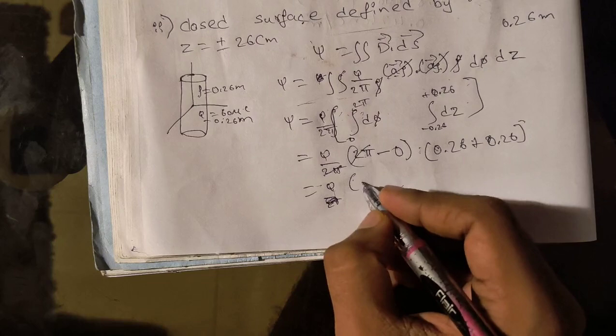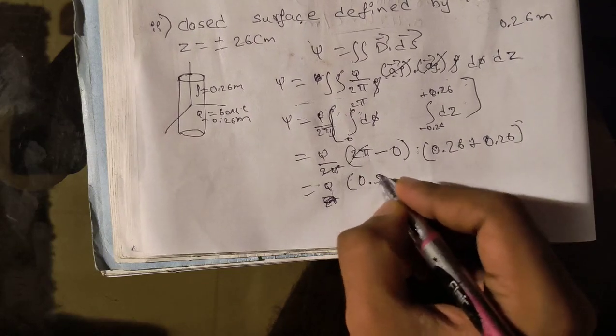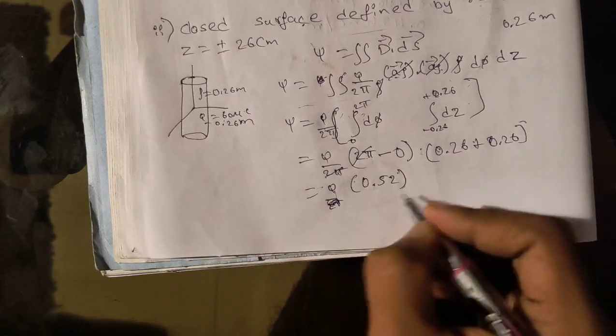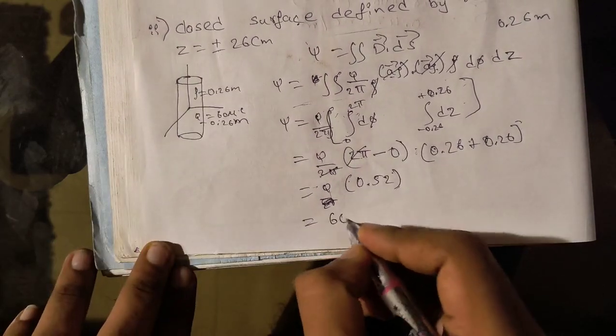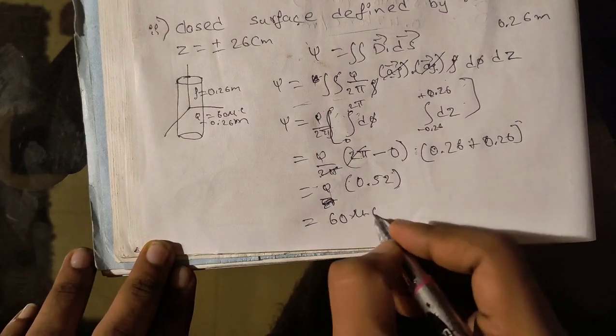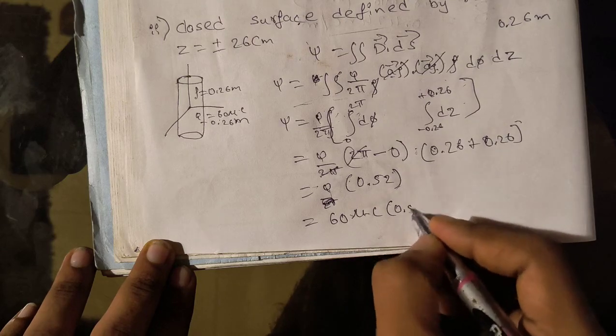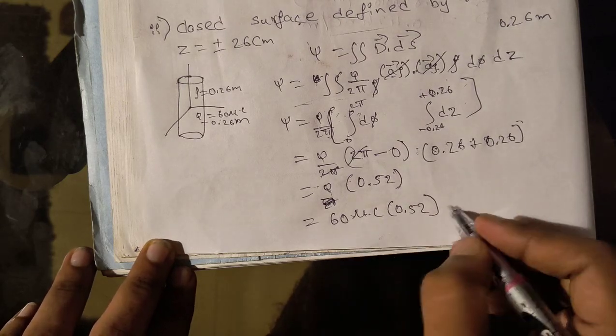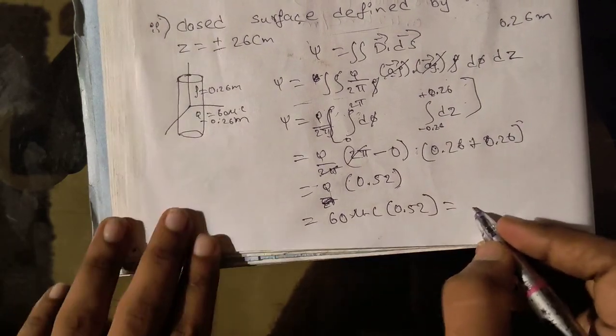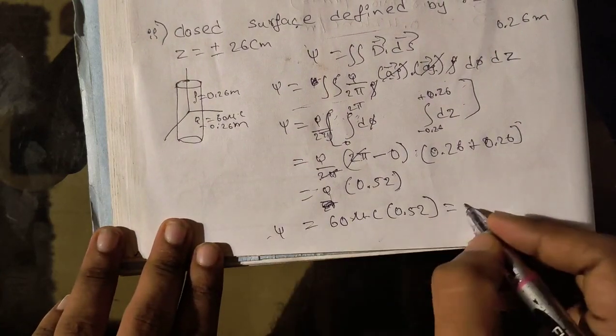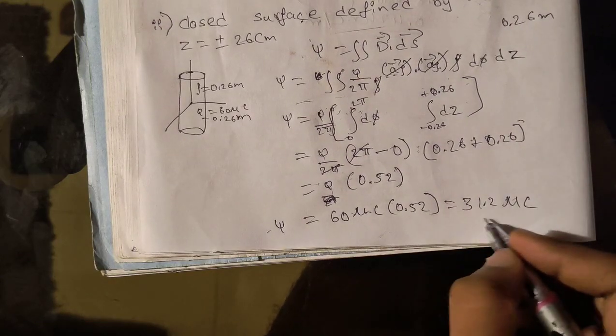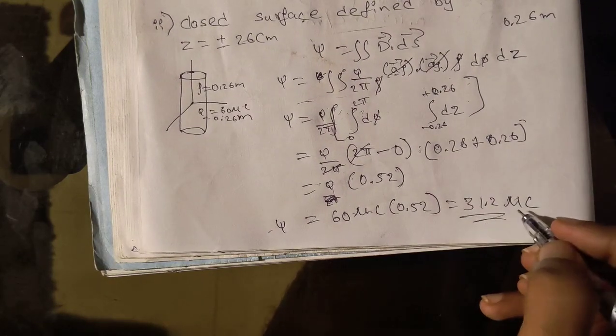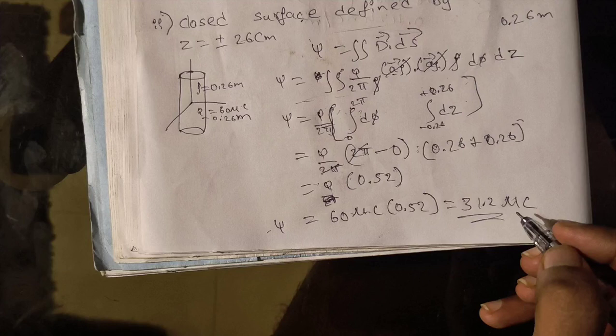By substituting integrals, we get 2π minus 0. Integration of z is z, and by substituting integrals, we get 0.26 plus 0.26. Then by solving this, 2π and 2π get cancelled, and 0.26 plus 0.26 is 0.52. So Q times 0.52, and our Q value is 60 microcoulomb, so 60 times 0.52 equals 31.2 microcoulomb.